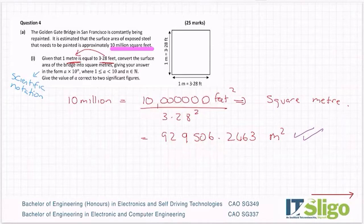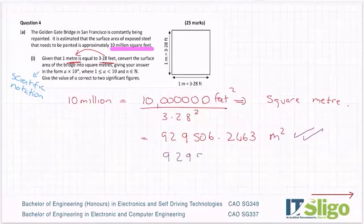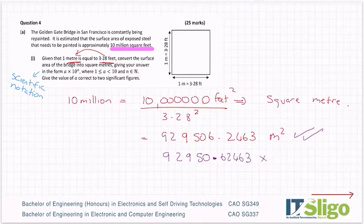So scientific notation is just a way of writing big numbers. So I get very nervous putting numbers like that into a calculator because I'm afraid I'll forget some of the zeros. So it's actually much easier to put in what's called scientific notation. So this number that I have here, I could write it as 92950.62463 multiplied by 10. So in other words, I've moved the decimal place back one place, but multiplying it by 10 will move it there. That's what multiplying by 10 does. It moves the decimal point along.